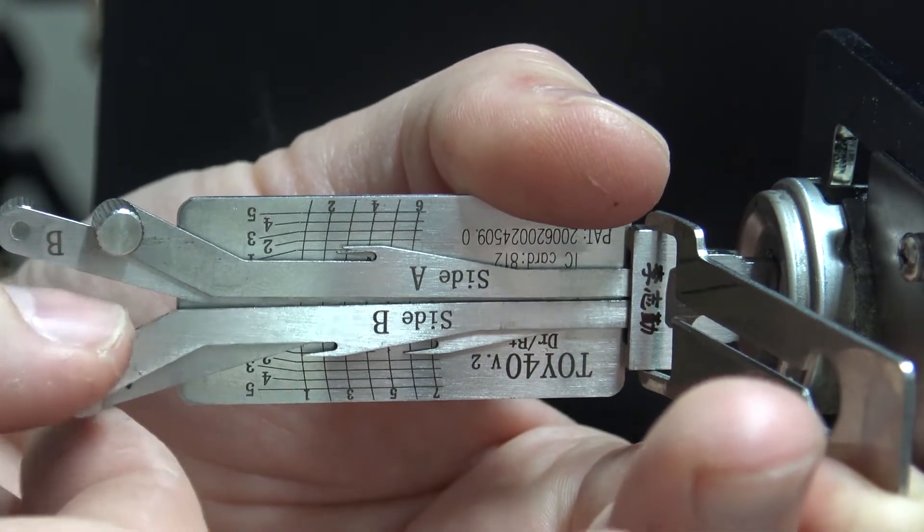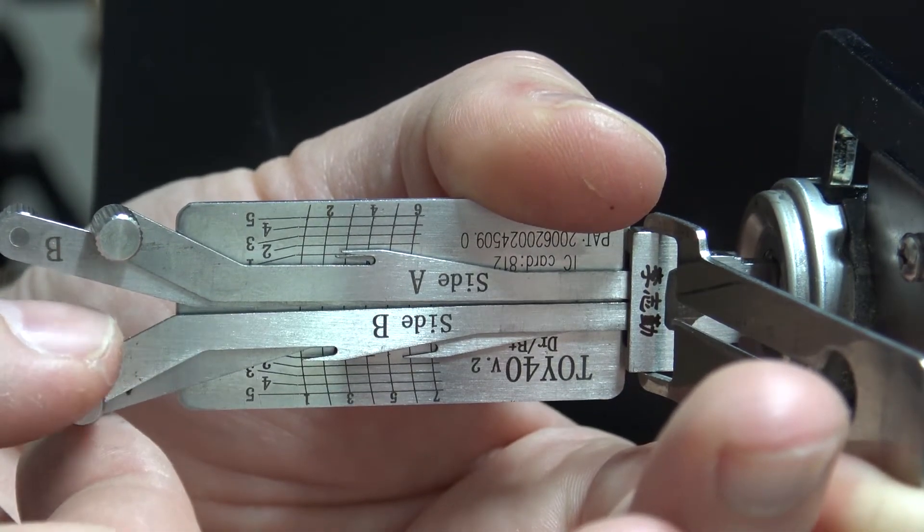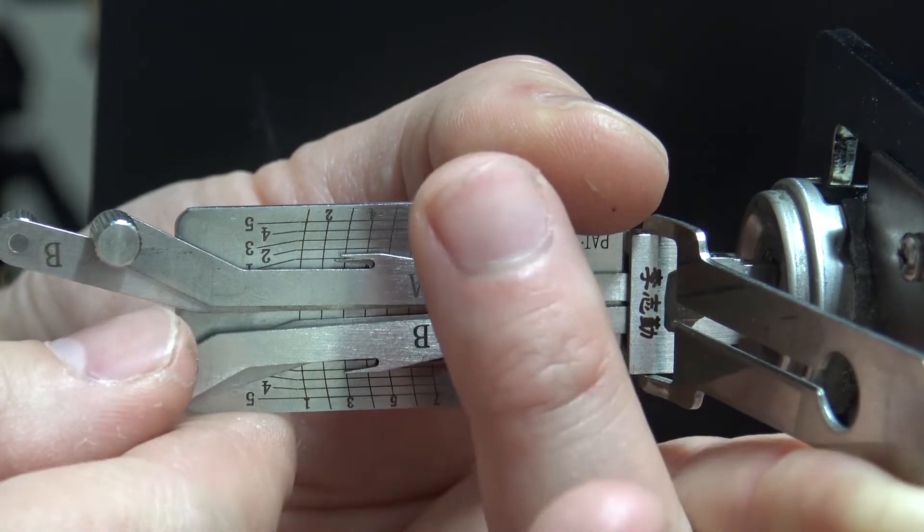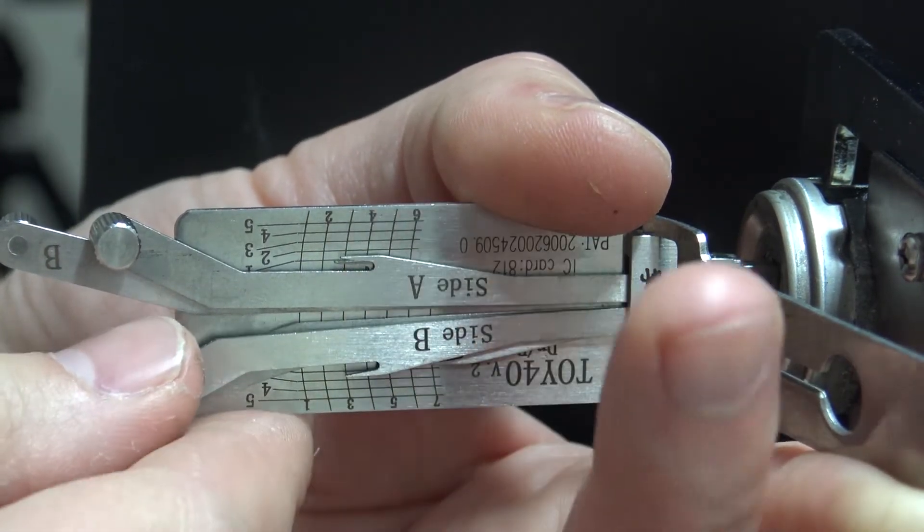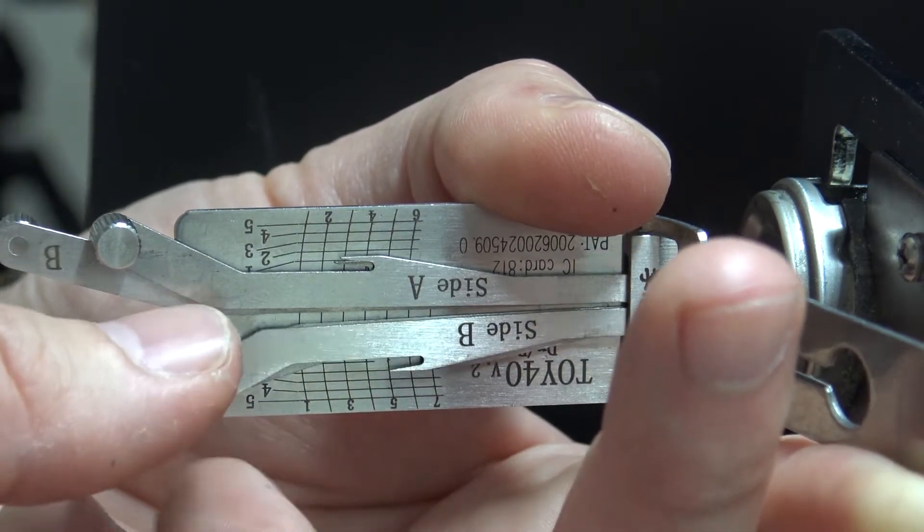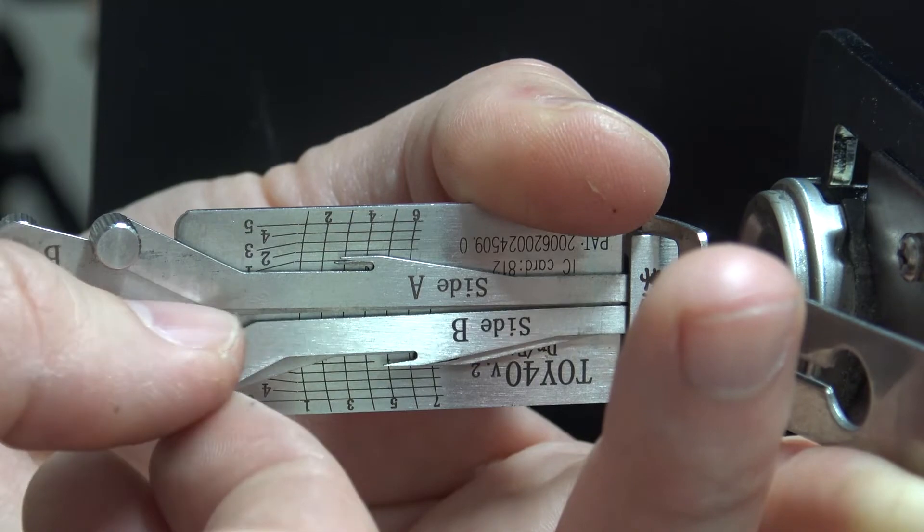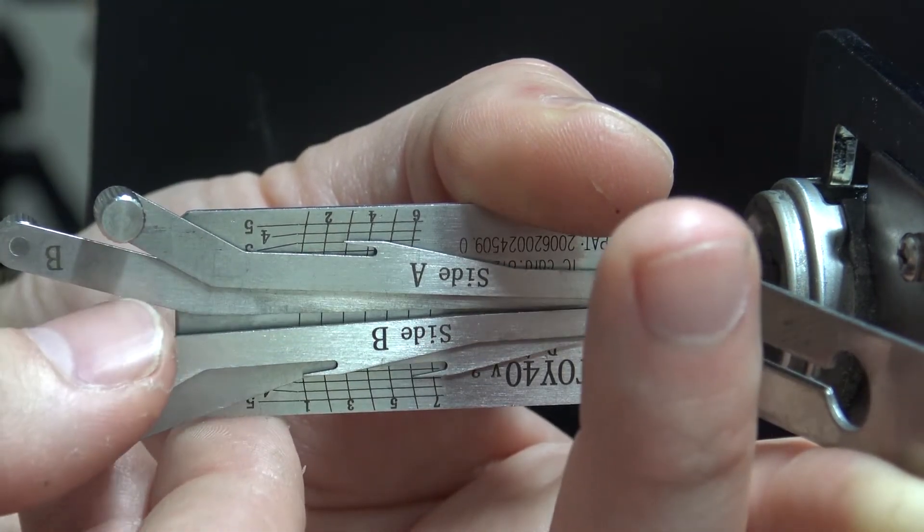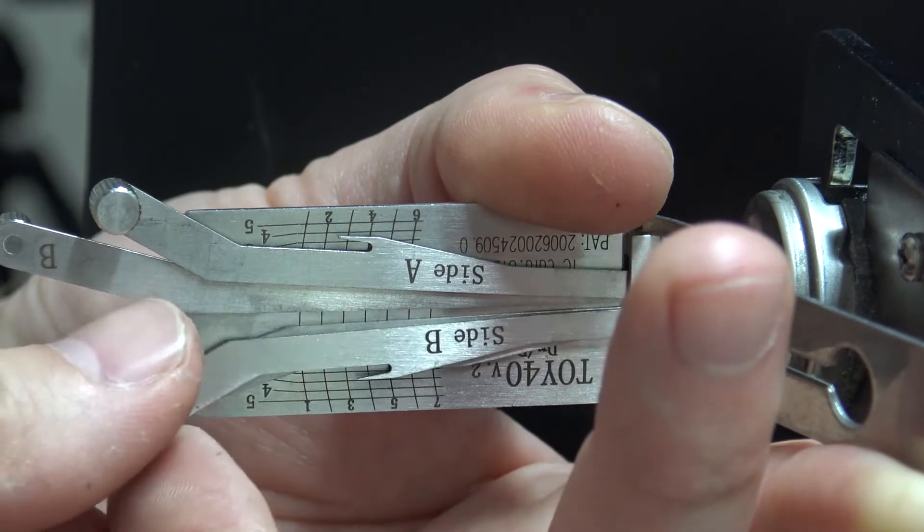Alright, so we're going to put some tension on it. We've got odd numbers going down on the B track. So 1 is springy, 3 is binding. We're going to have to pick all 7 here on the B track. So 3 clicked, 5 is springy, 7 is springy. Let's head back to number 1. 1 is binding. Click on 1, that is now set.